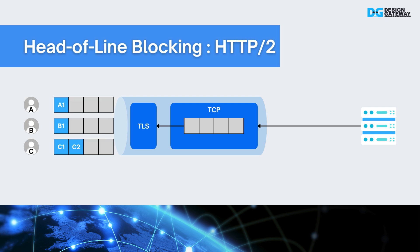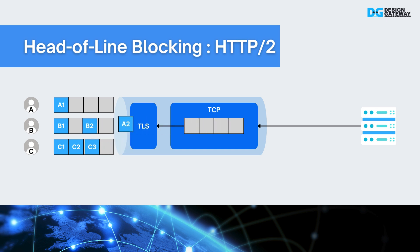HTTP/2 addresses head-of-line blocking with multi-stream multiplexing at the application layer. It splits data into smaller frames, interleaves them, and identifies them by stream IDs. For example, there are three streams A, B, and C for this connection. This allows independent streams to be processed out of order, reducing head-of-line blocking at the application layer, though it still remains an issue at the transport layer with TCP.